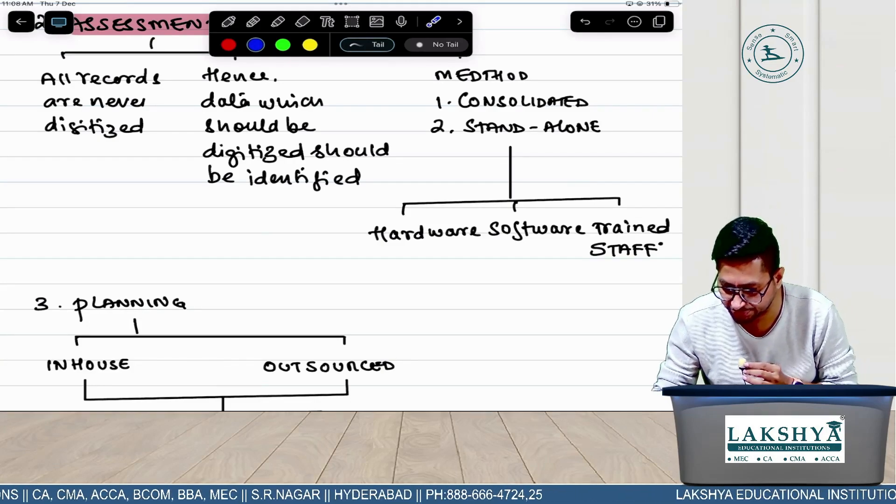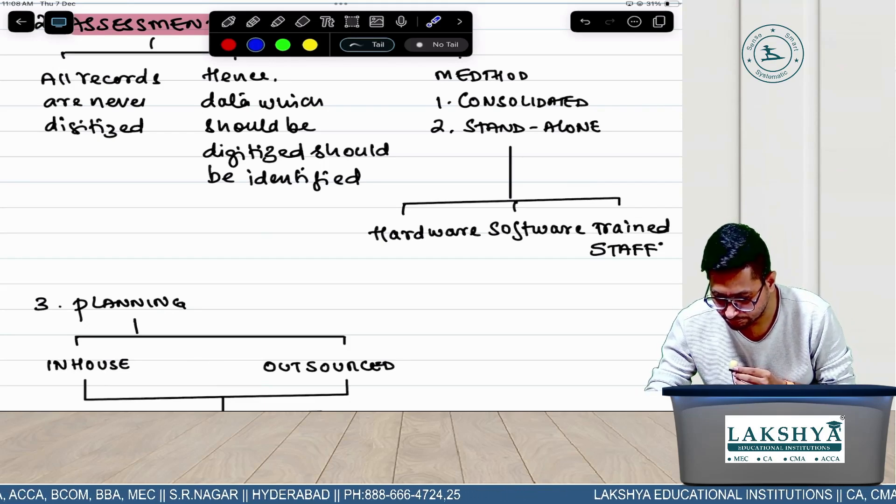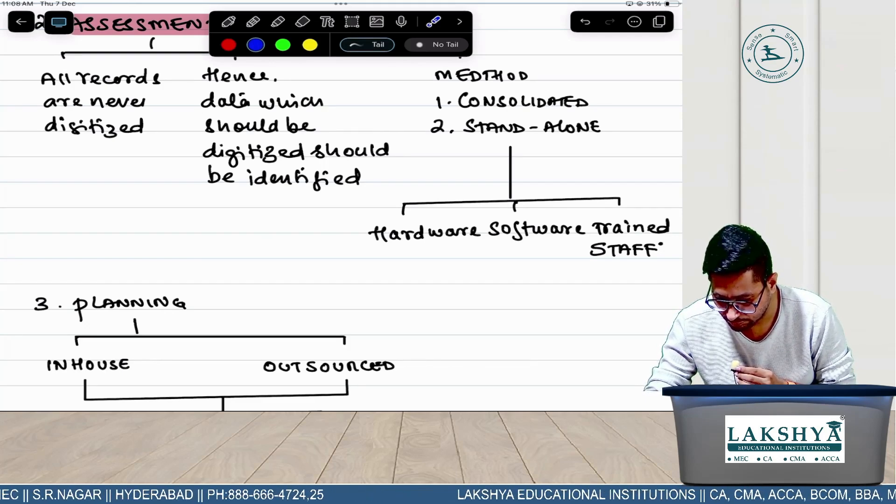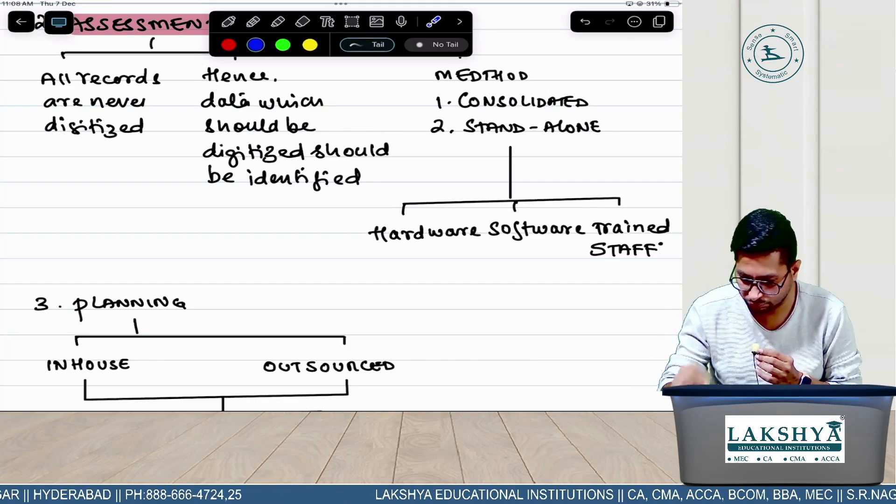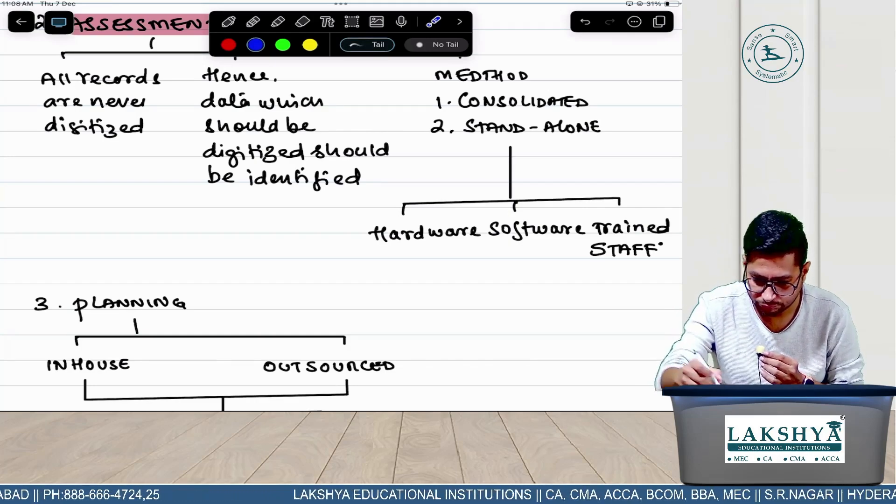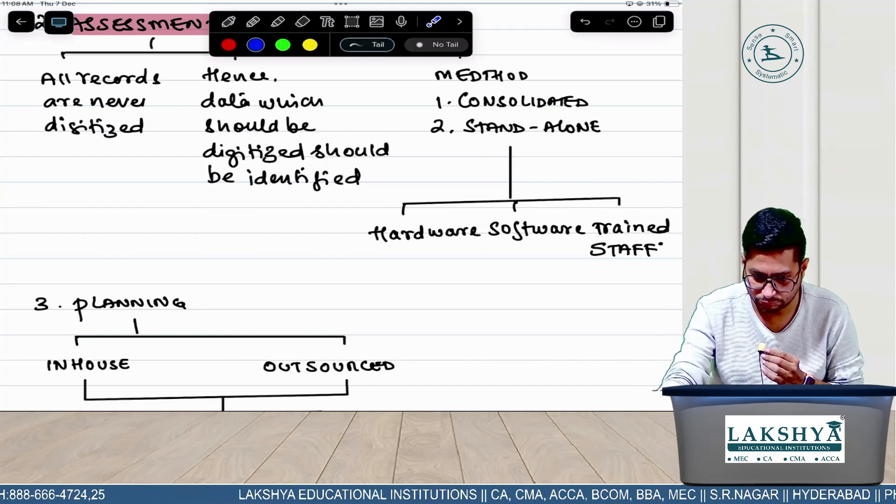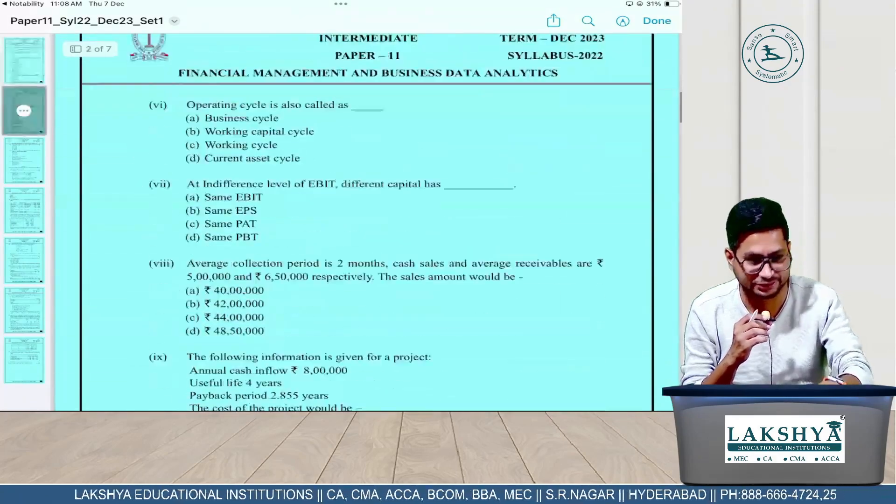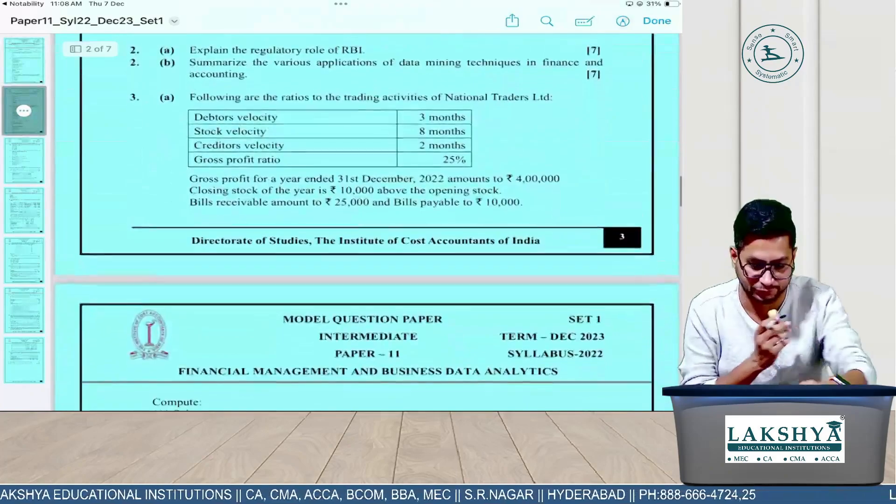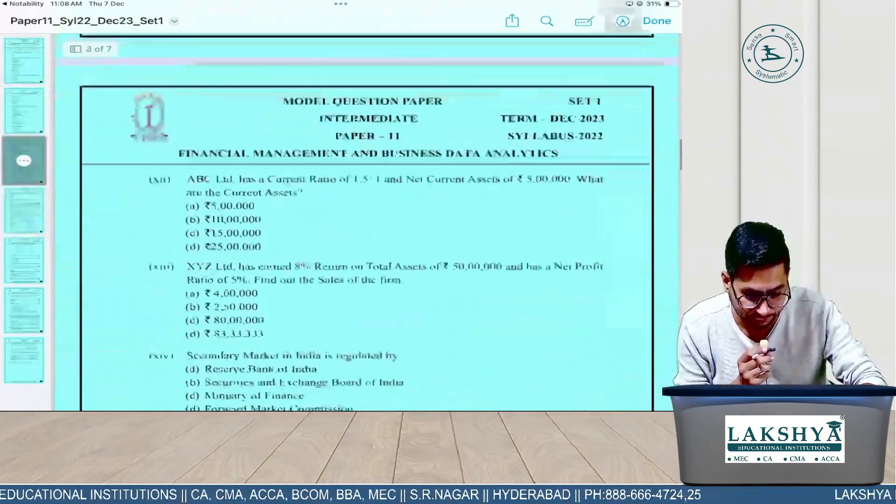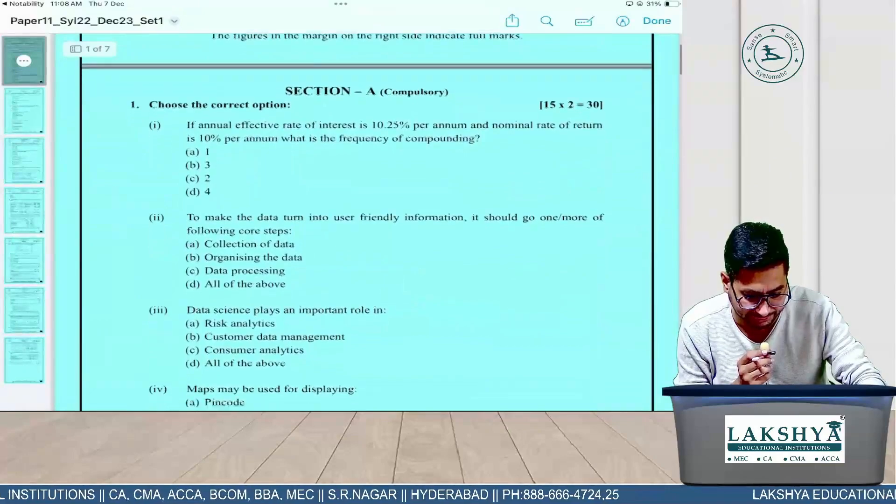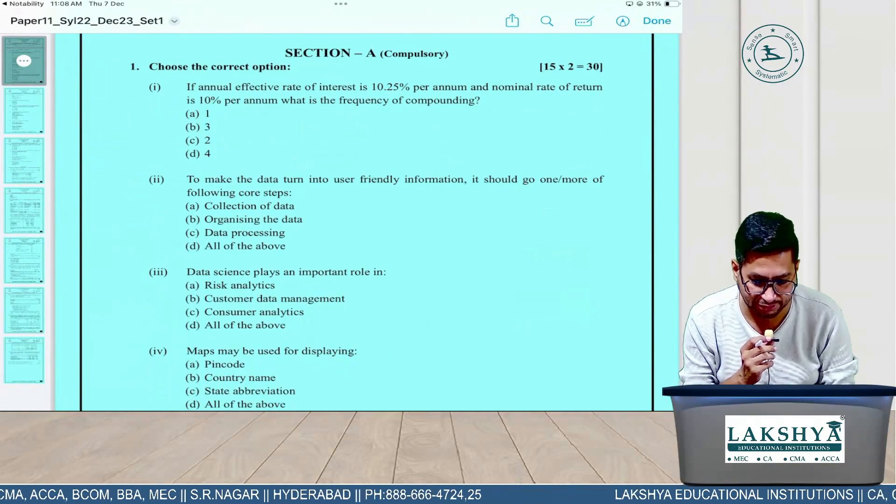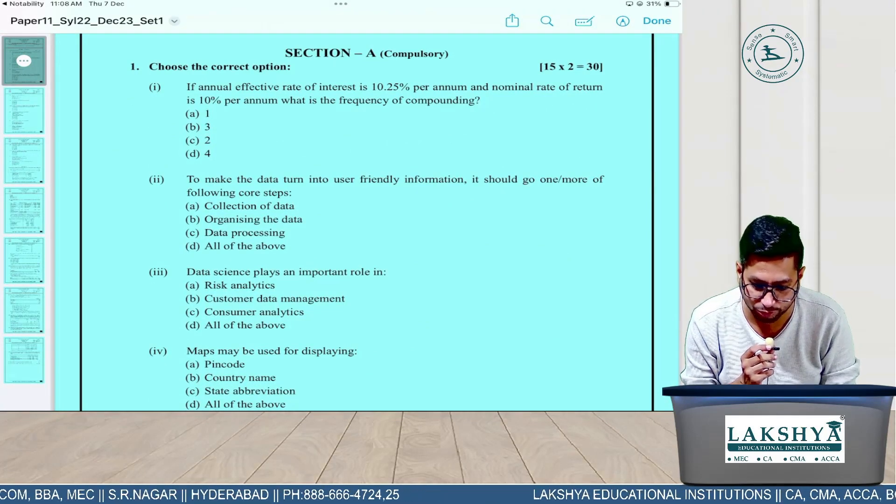One minute, I'll load it here. This was last time's first attempt question paper. You see, simple MCQs they've given. For data analytics, question 2C: 'To make the data turn into user-friendly information, it should go for one or more steps or step set to make it more user-friendly.' I need to collect the data, organize in format, then do processing also. What will be our answer? Data science.